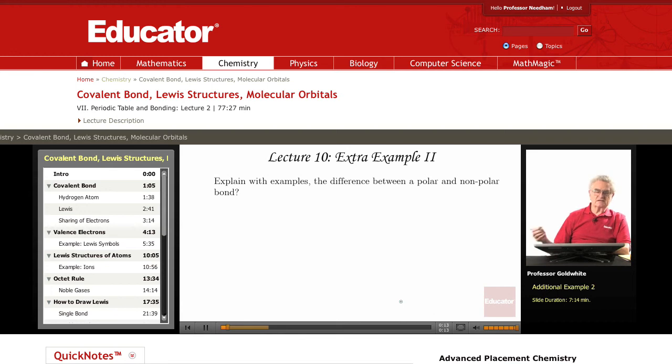Well, consider one of the simplest of all covalent bonds, the bond in which two hydrogen atoms share a pair of electrons. Each hydrogen atom is identical, the nucleus exactly the same, one proton.